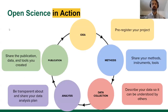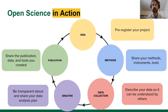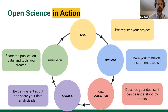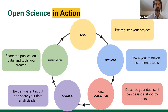When transforming the research life cycle into Open Science in action, at every stage there are specific components you can practice. At the idea stage, you can pre-register your project before you start. You can share your methods and instruments openly. With data collection, you can describe your data so it's easily understood. You can share your analysis plan to be transparent and accountable. And finally, you can share not just the publication but the tools and all underlying data.